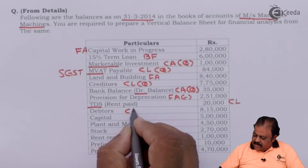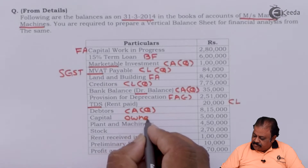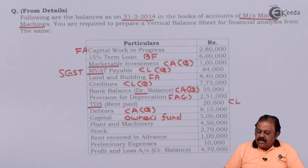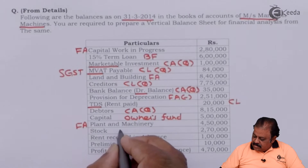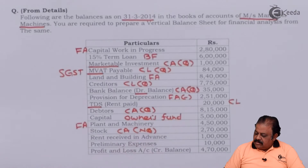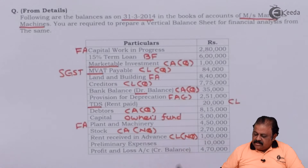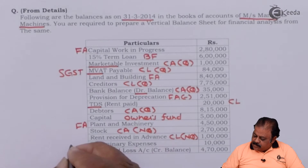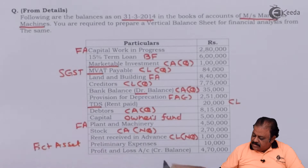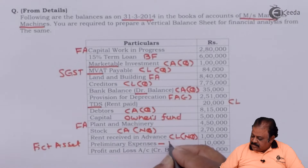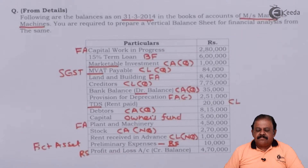Debtors are a current asset and a quick current asset. Capital is part of owner's fund. Plant and machinery is a fixed asset. Stock is a current asset, non-quick. Rent received in advance is a current liability, non-quick (income received in advance). Preliminary expenses are a fictitious asset and will be deducted from owner's fund, that is reserves and surplus. Profit and loss credit balance is part of reserves and surplus.